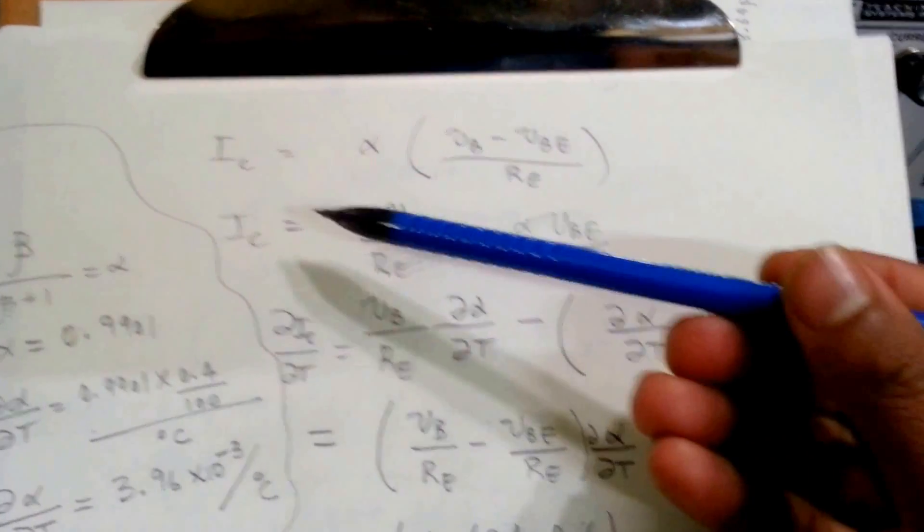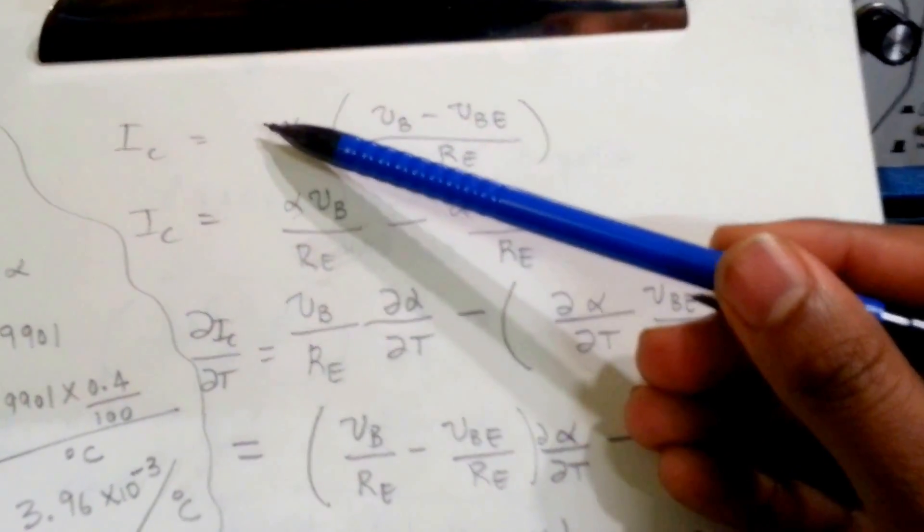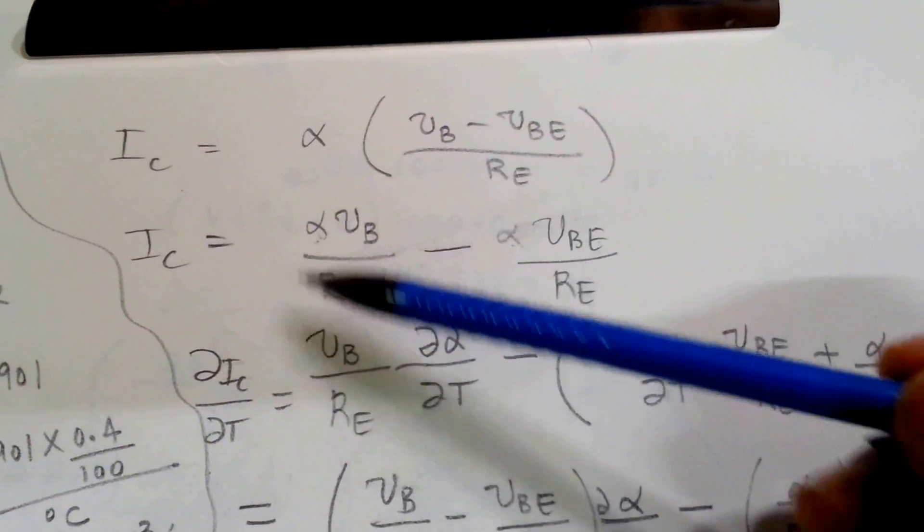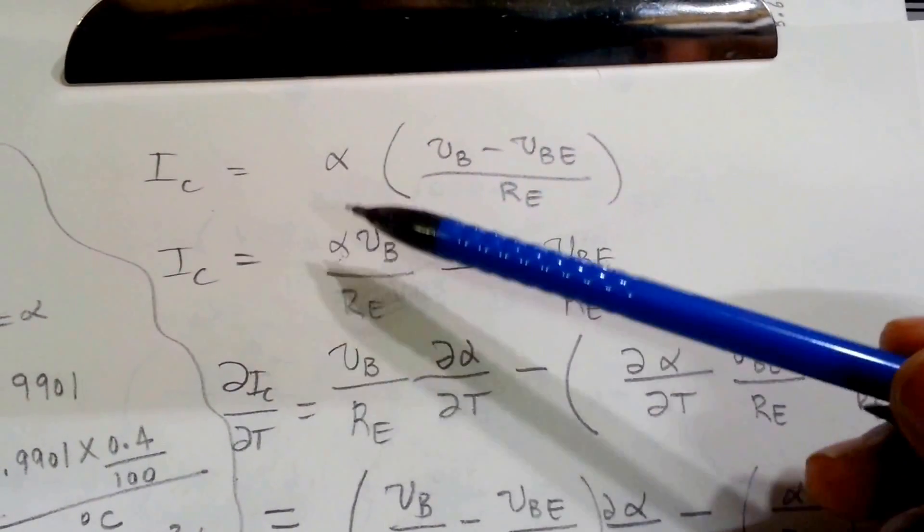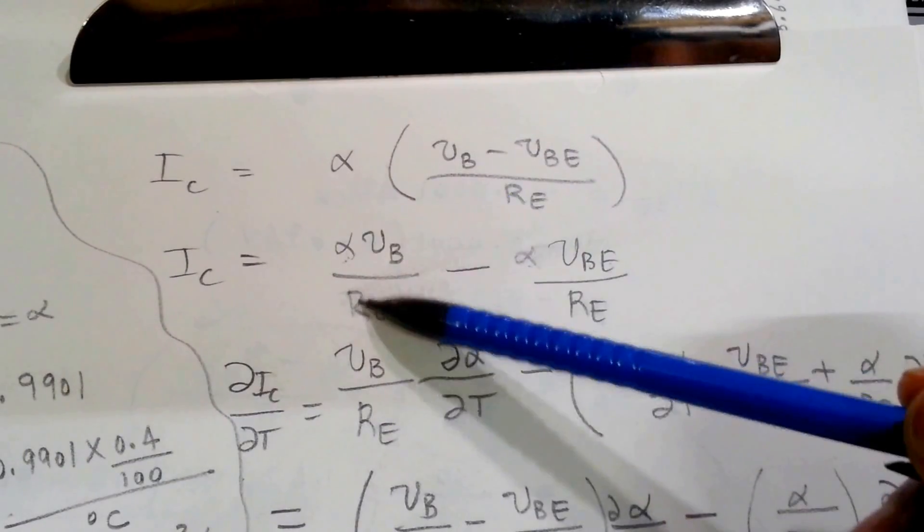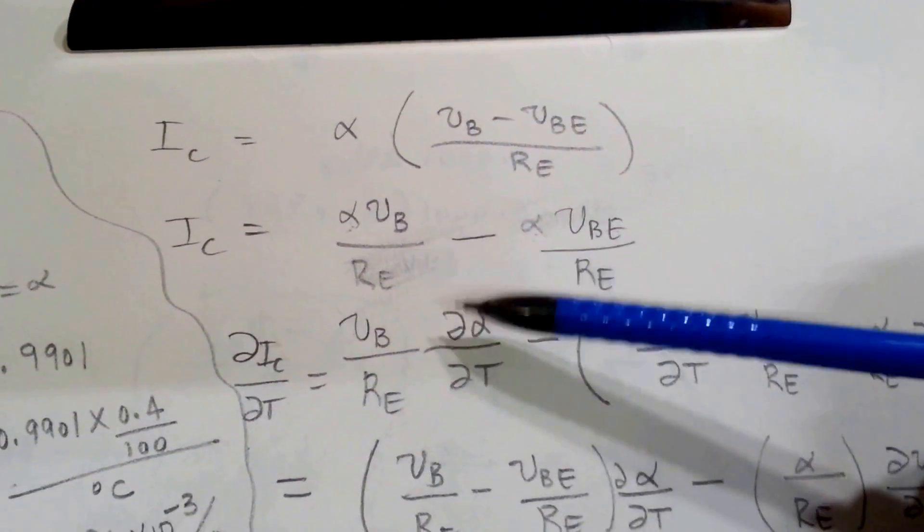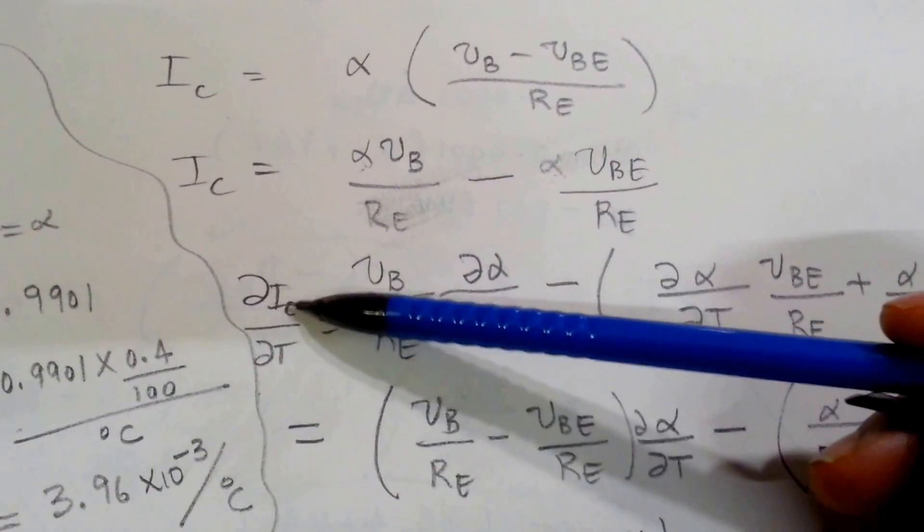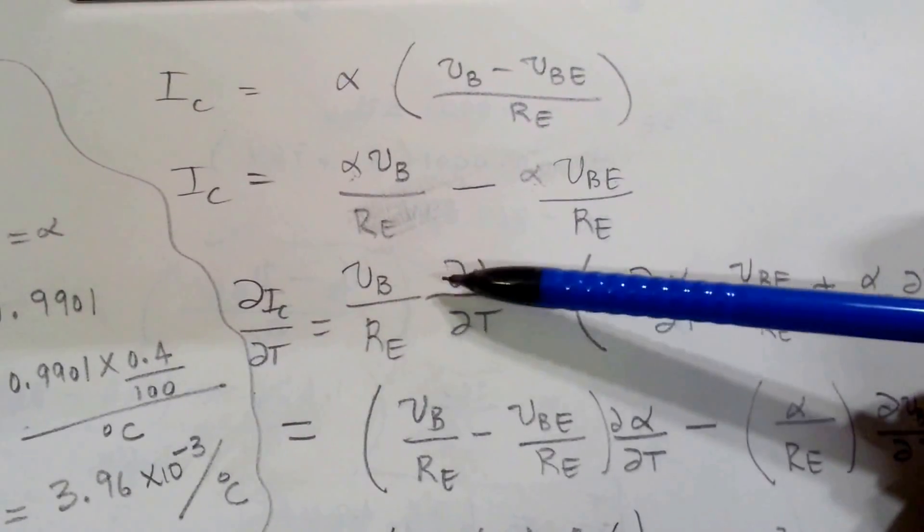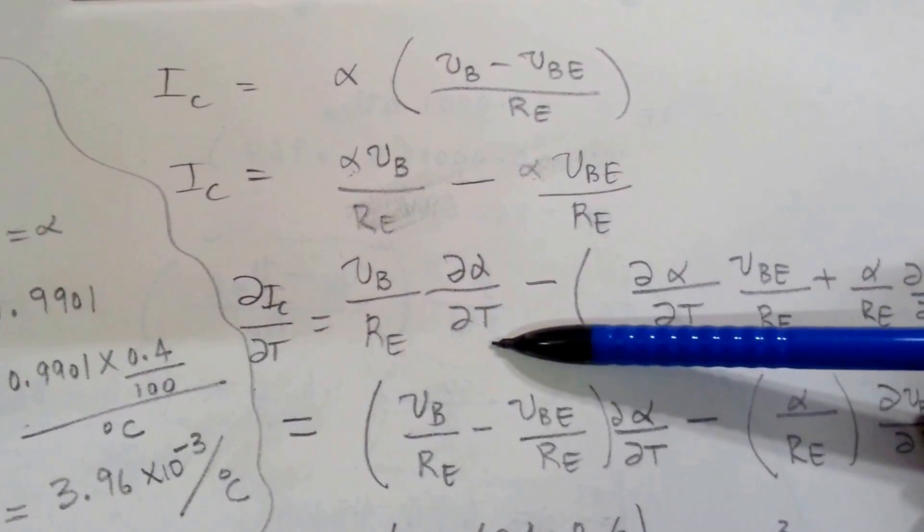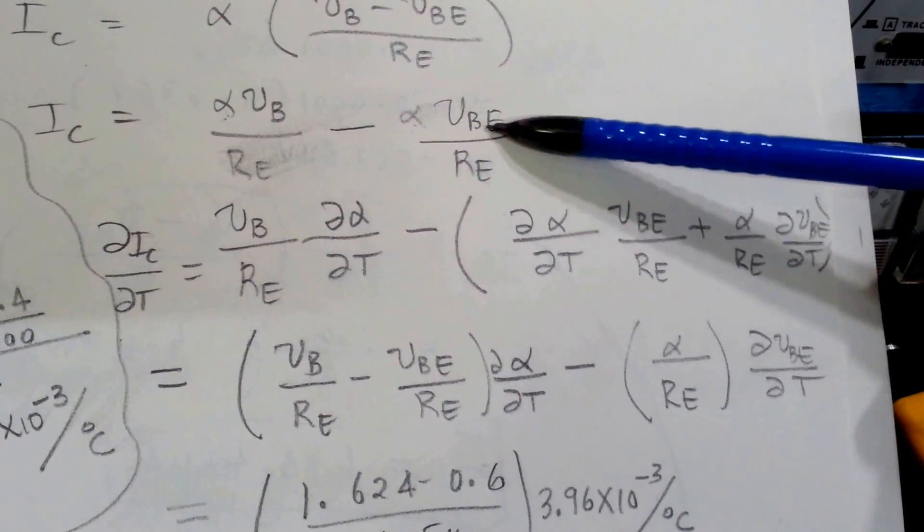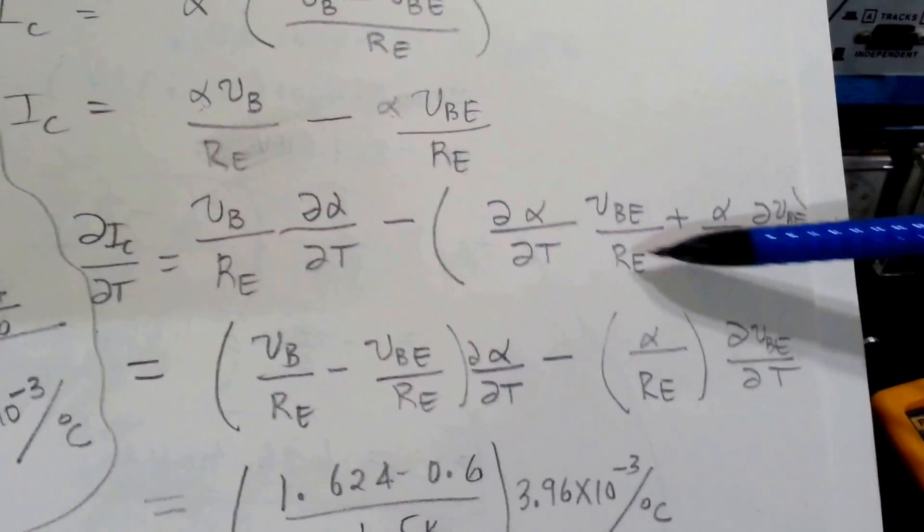So if we continue with our first equation, IC equals alpha multiplied by VB minus VBE divided by RE. Now, in order to take this into account, because now two parameters are getting affected by temperature, alpha and VBE, we distribute this alpha into the equation, we get this expression. Now we'll use a product rule. If we take the partial differential of the collector current with respect to temperature, we'll have this expression. And we have to use product rule here. We've used product rule to get the effects of the temperature on alpha and VBE, so the expression becomes this.